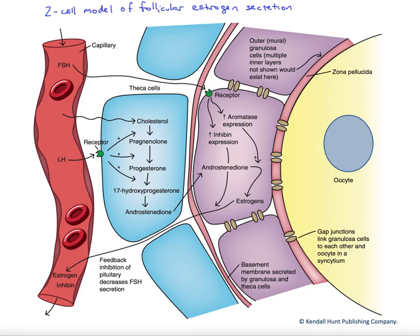We'll look at the two-cell model of follicular estrogen secretion. It's important to note when and where this is actually occurring. The follicular estrogen secretion only occurs during the ovarian cycle, initiated about once per 28 days.